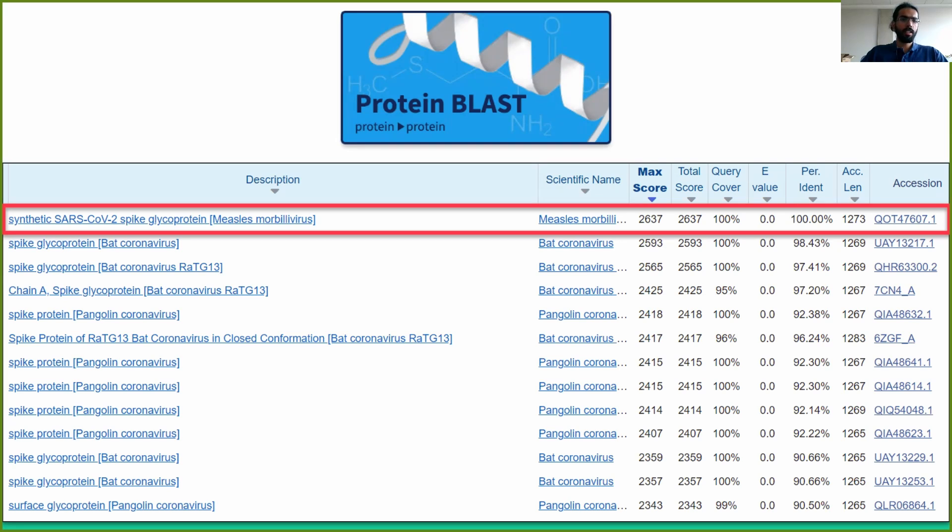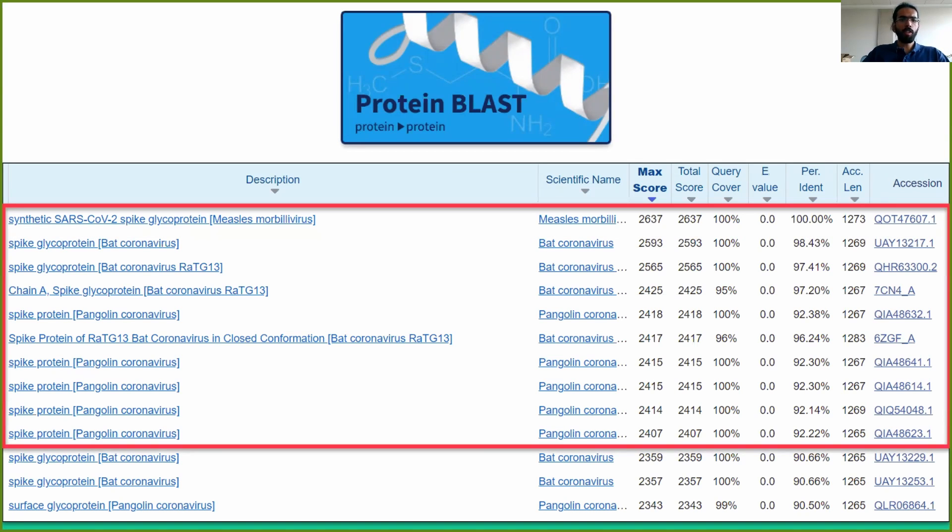For our purposes, given that this S-protein sequence has a percent identity of 100% with respect to our own SARS-CoV-2 S-protein sequence, meaning that the two sequences are identical, we can simply use this sequence to represent SARS-CoV-2 in our phylogenetic tree. There are also quite a few bat and pangolin coronaviruses in the results. As an exploratory exercise, we can extract the top 10 most relevant sequences to use as our dataset.